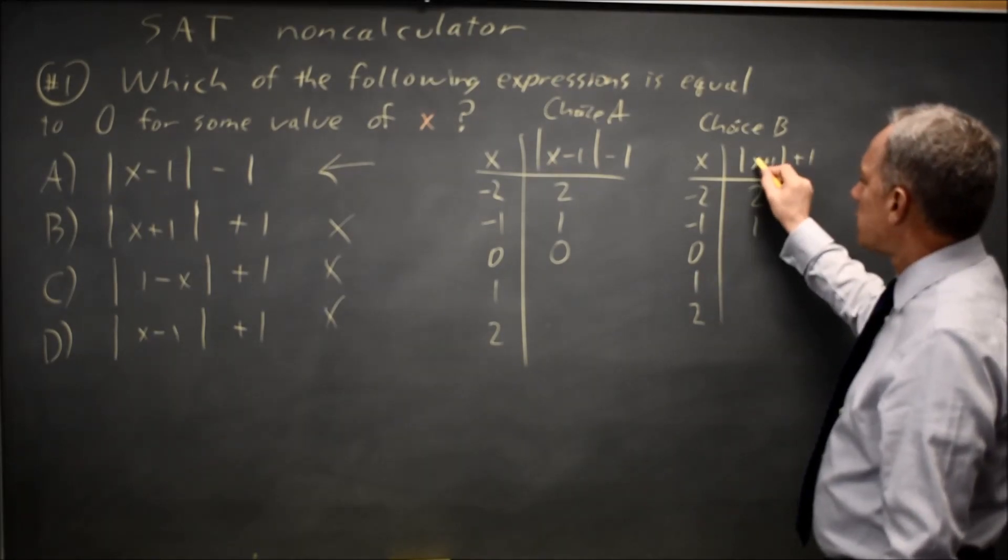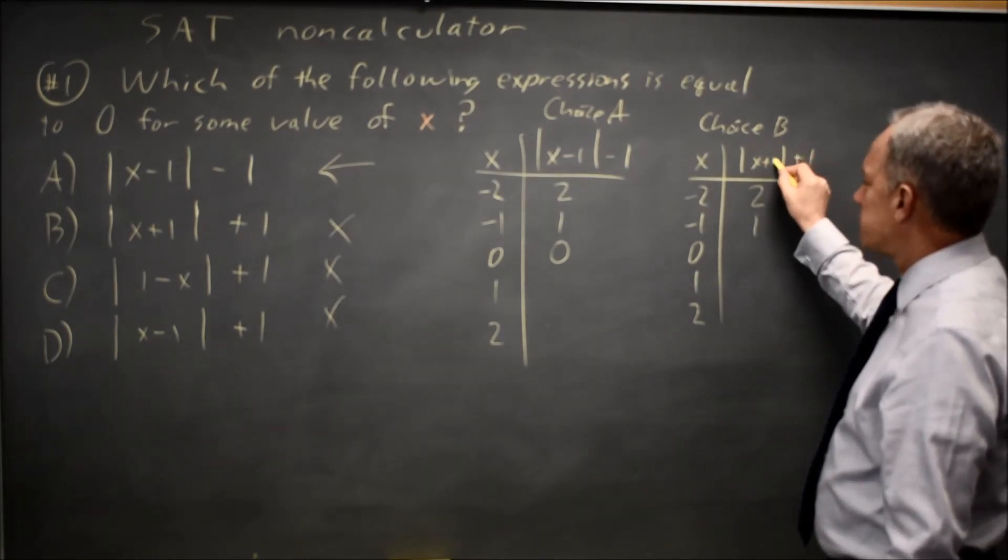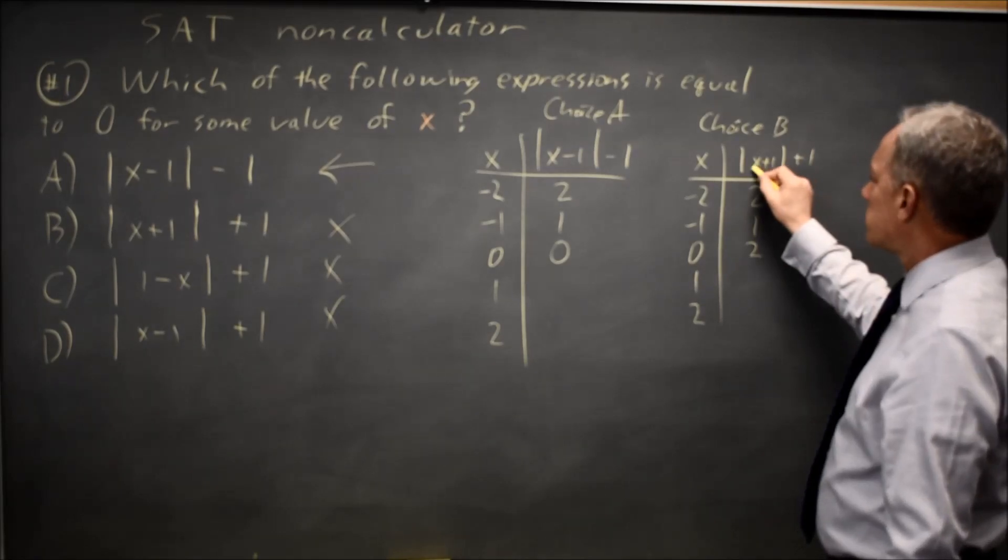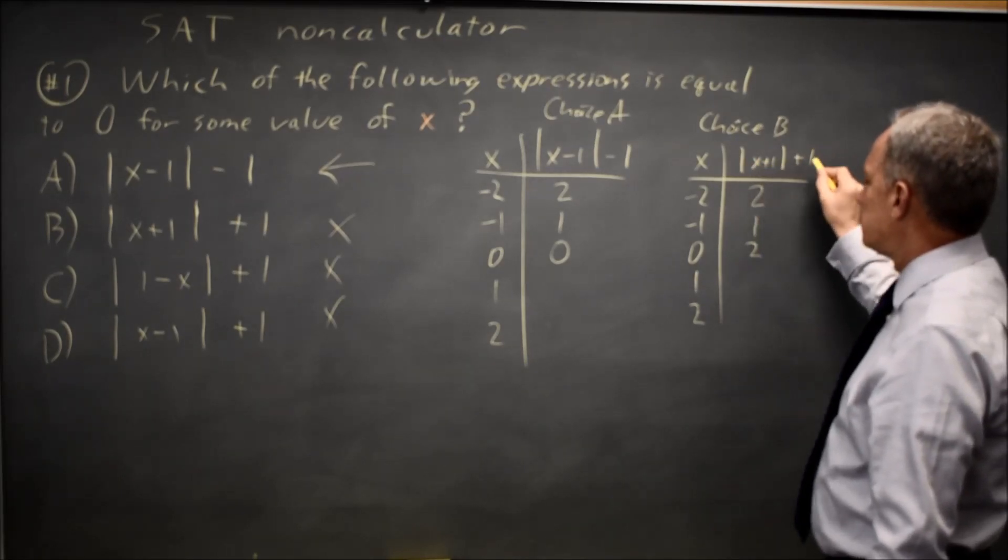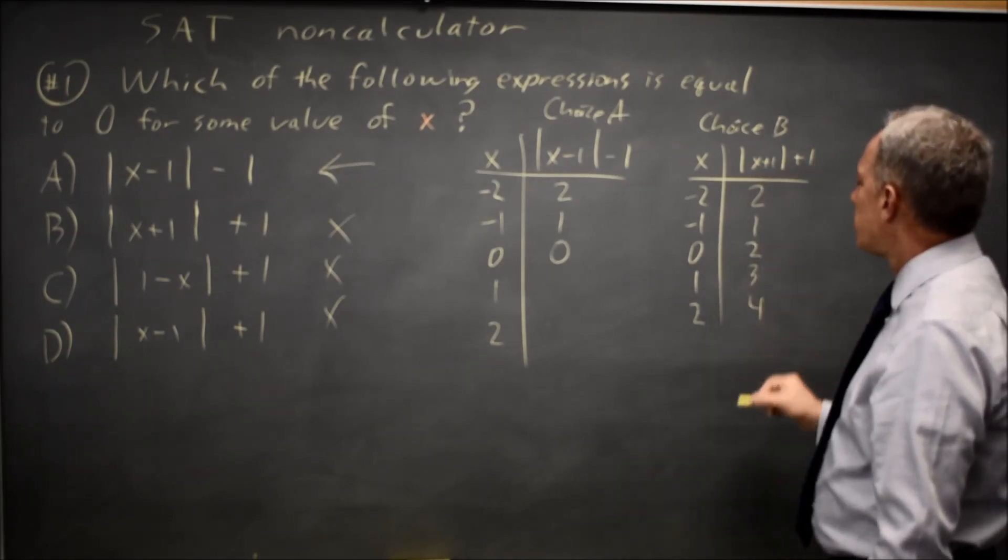At zero, I get zero plus one is one, absolute value is still one, and one plus one is two. One plus one is two, absolute value is still two, plus one is three, and four.